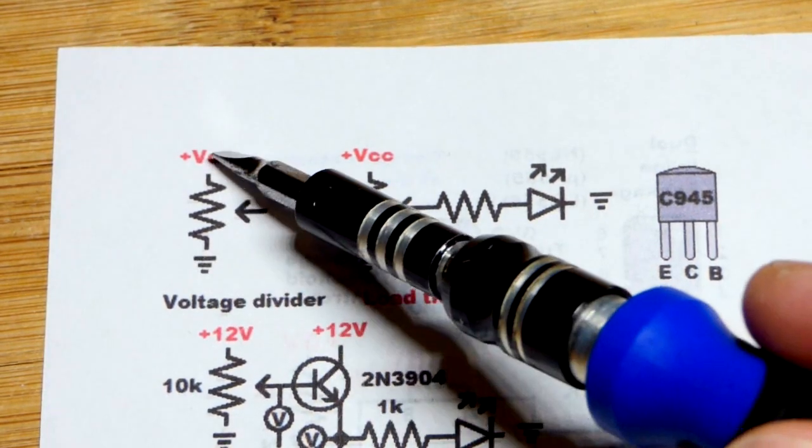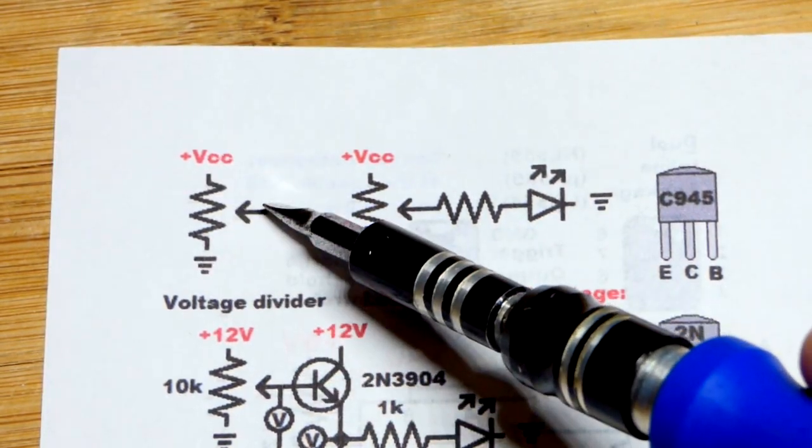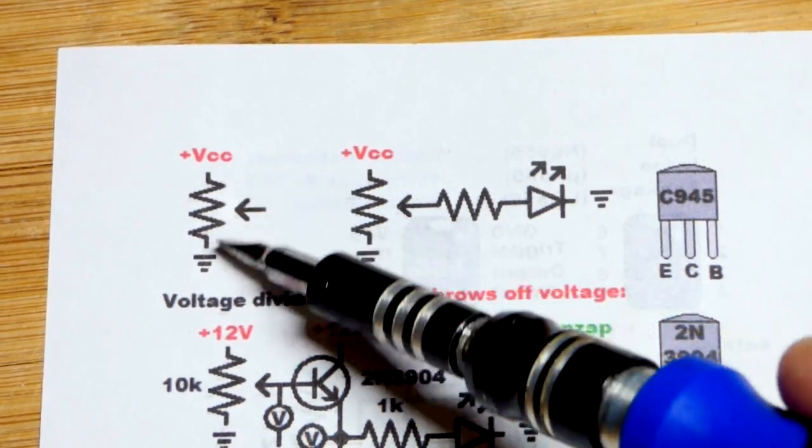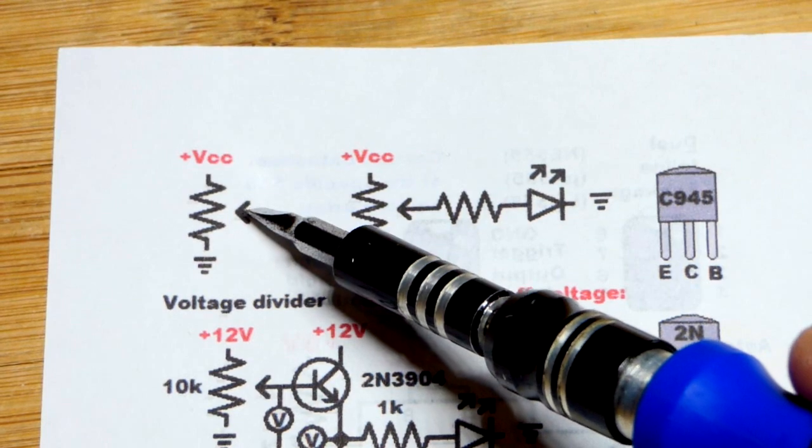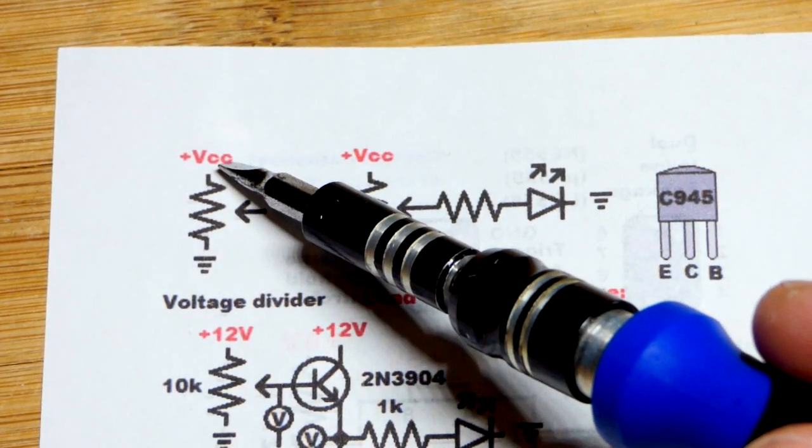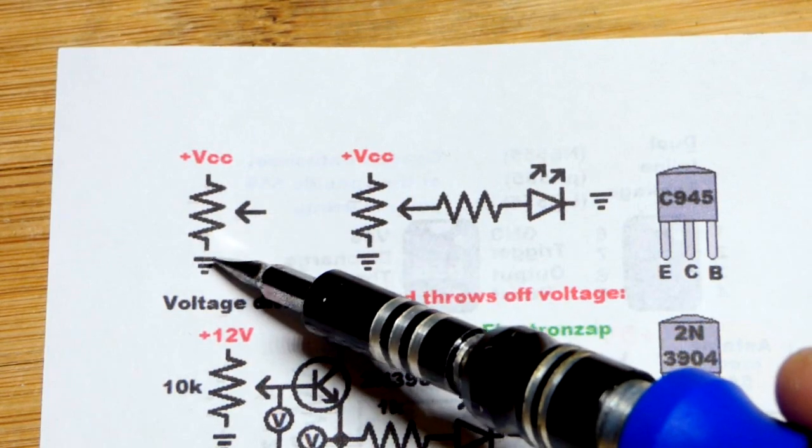So we had the trim pot right there with the power supply across it. And then the output is the wiper that slides across there to determine how much resistance is more positive or negative. But in any case, we saw that we could get the voltage closer to the positive supply, higher voltage, closer to the negative supply, lower voltage.